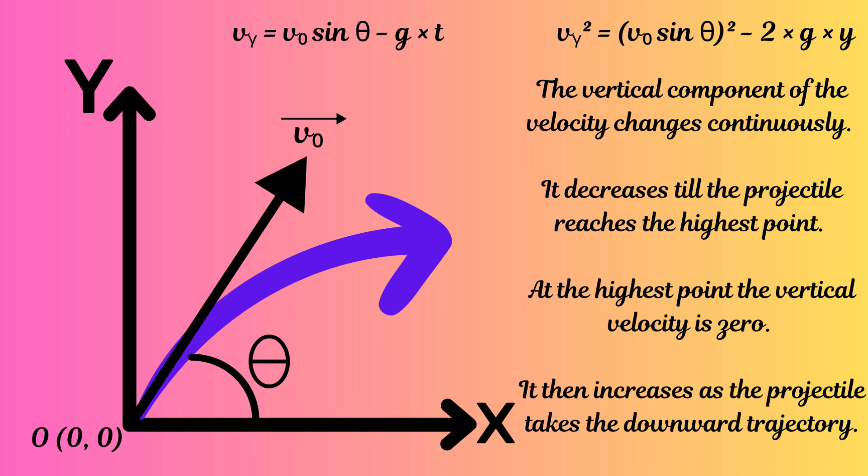The minus sign is because acceleration is a vector quantity and we consider up as positive y and down as negative y. Following this convention, acceleration is negative, and that is why the g·t term is subtracted from the initial vertical component of velocity. The vertical component of the projectile's velocity changes continuously — it decreases until the projectile reaches the highest point, because a constant downward acceleration acts opposite to the velocity on the upward trajectory. As the velocity decreases, it eventually becomes zero.